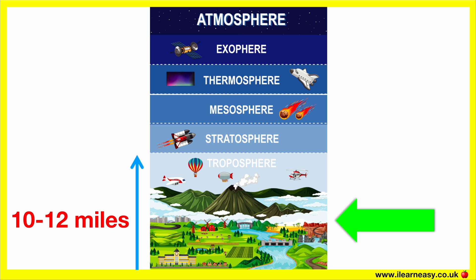The temperature of this layer decreases the higher you go. This is because most of the heat found in the troposphere is generated by the transfer of energy from the Earth's surface. The troposphere is also the densest atmospheric layer, because it is compressed by the weight of the rest of the atmosphere above it.